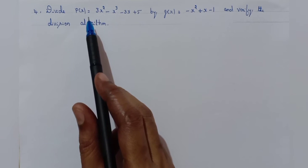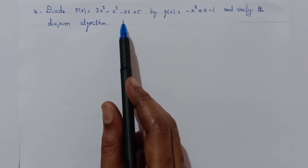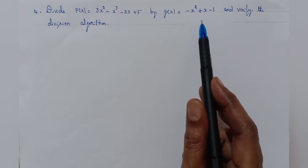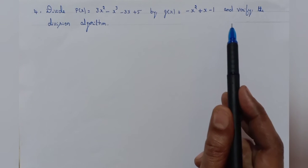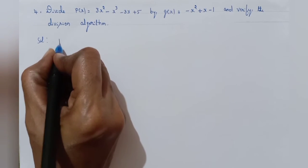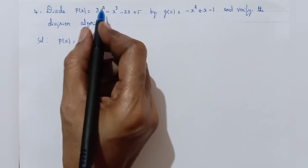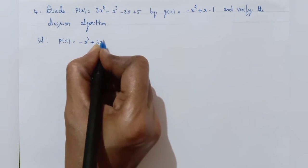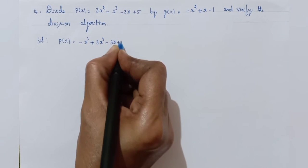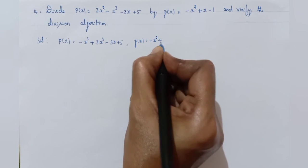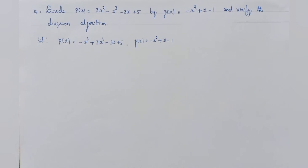Next question: Divide p of x equal to 3x square minus x cube minus 3x plus 5 by g of x equal to minus x square plus x minus 1, and verify the division algorithm. Now write p of x as minus x cube plus 3x square minus 3x plus 5 and g of x as minus x square plus x minus 1. Divide p of x by g of x.